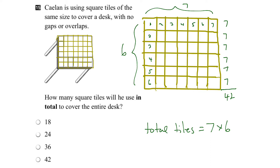Or we could go the other way. Each column has 1, 2, 3, 4, 5, 6 tiles in it. So each of the 7 columns would have 6. Adding 6 plus 6 plus 6 plus 6 plus 6 plus 6 plus 6: 6 plus 6 is 12, 18, 24, 30, 36, 42. We get the same answer.